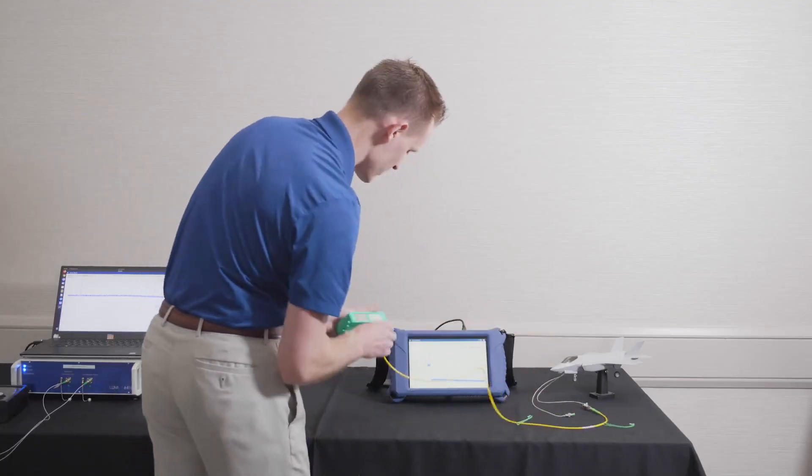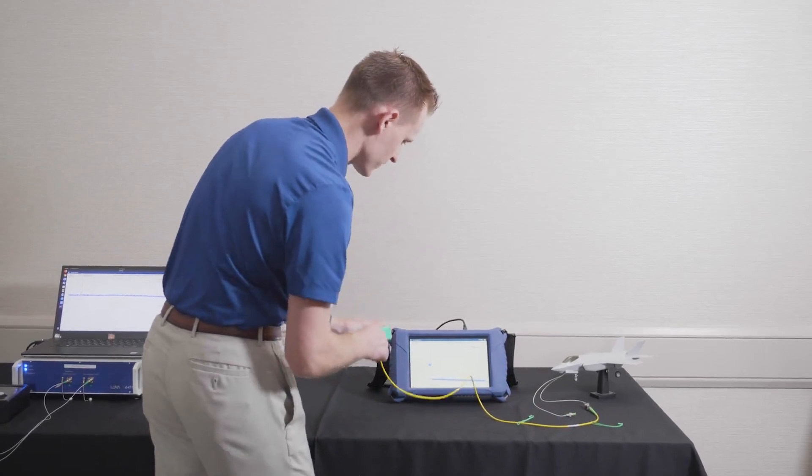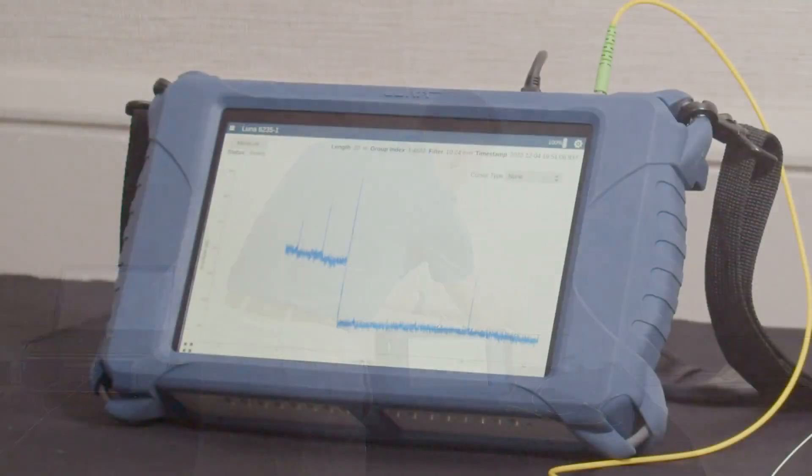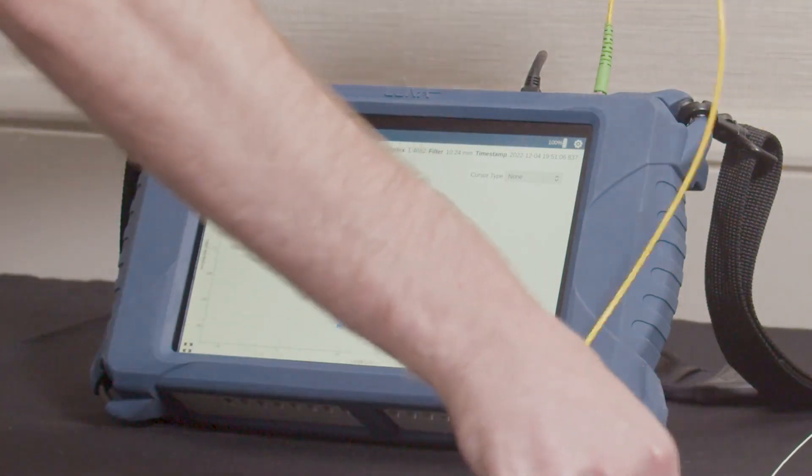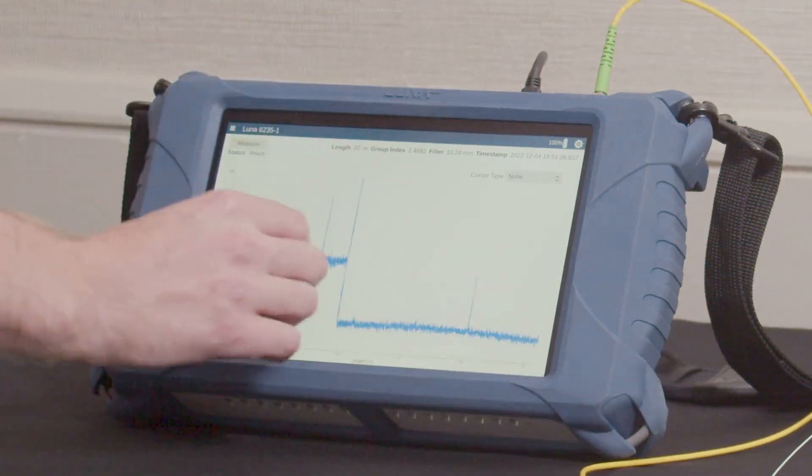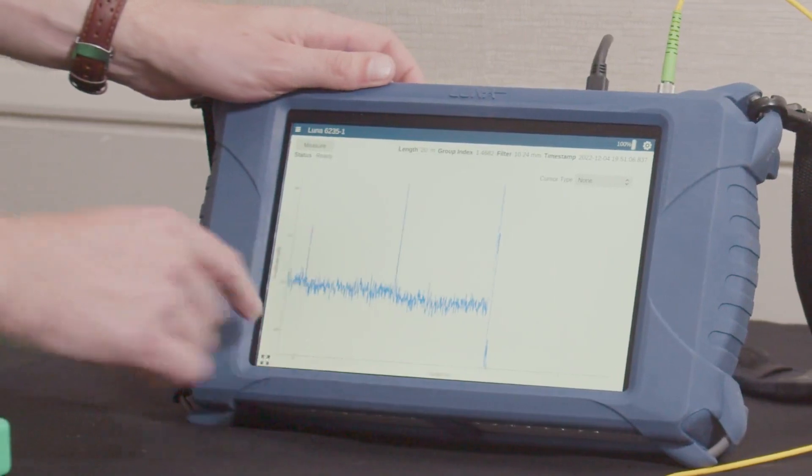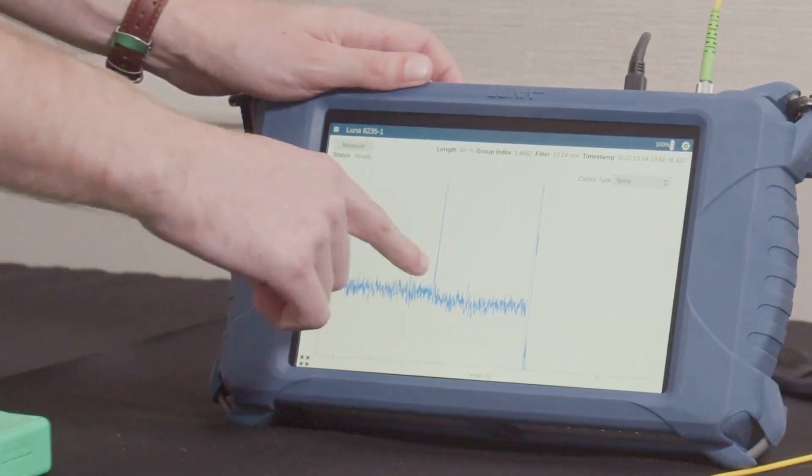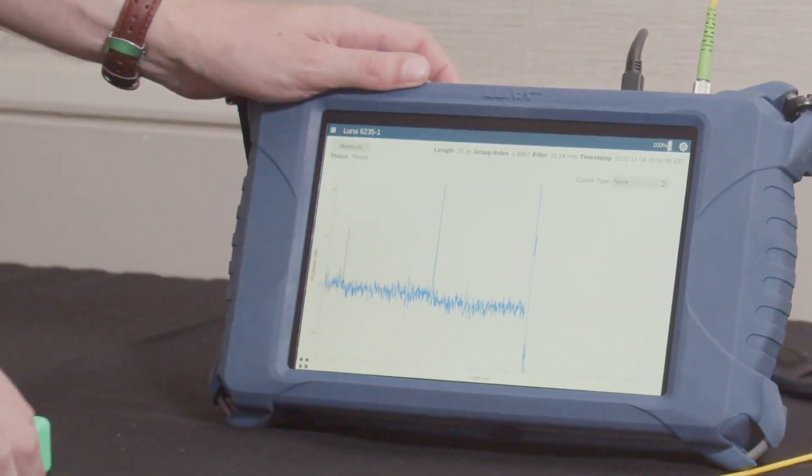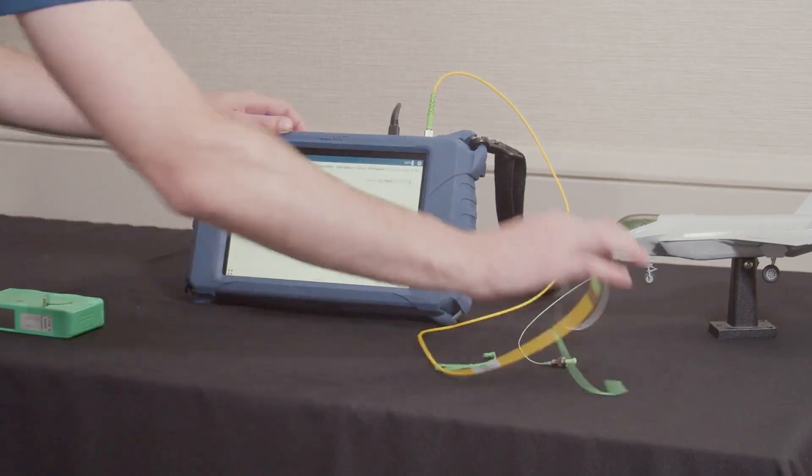If I go ahead and connect a real fiber network and take a measurement, now we can see what's actually happening inside that aircraft. So I've connected a yellow jumper fiber, which is what we can see right here. We have our front panel connector, Rayleigh scatter over about one meter, and then our connector into the airplane.